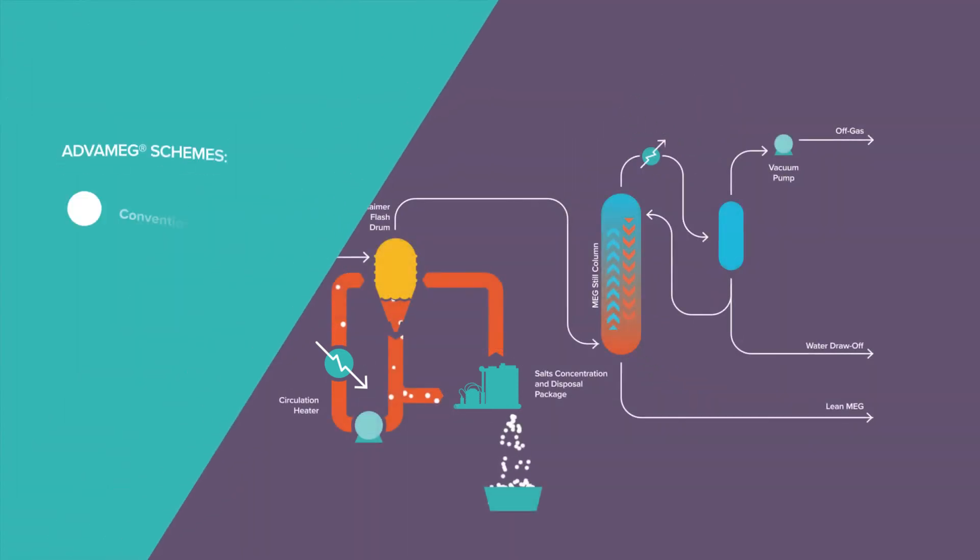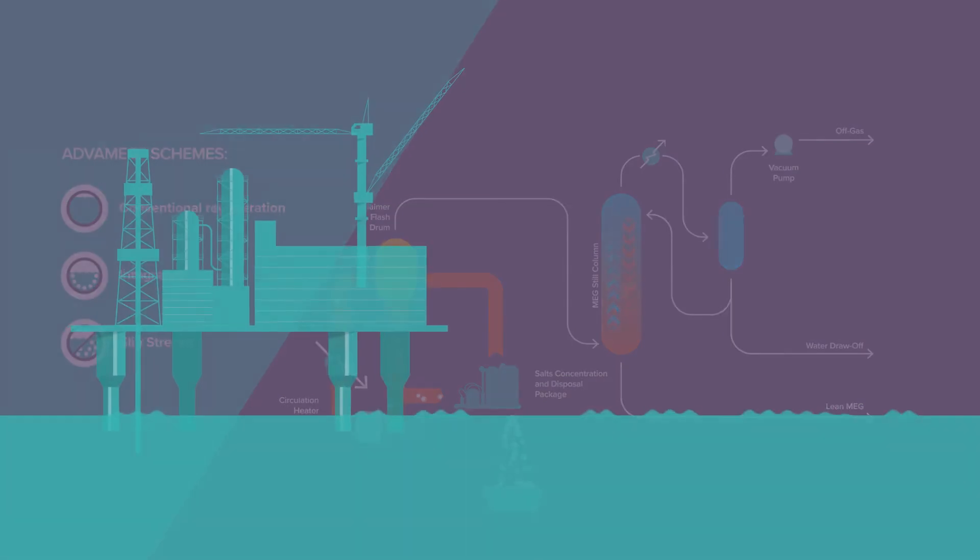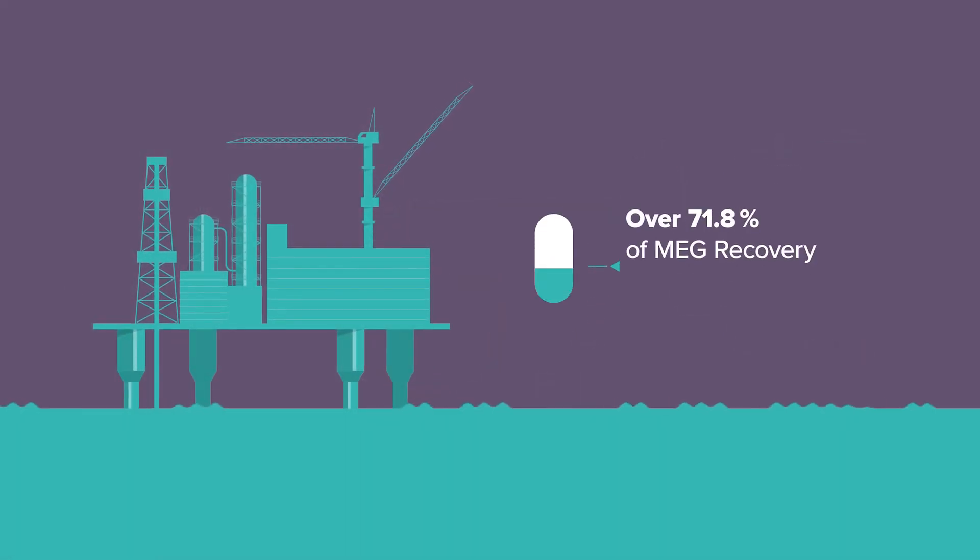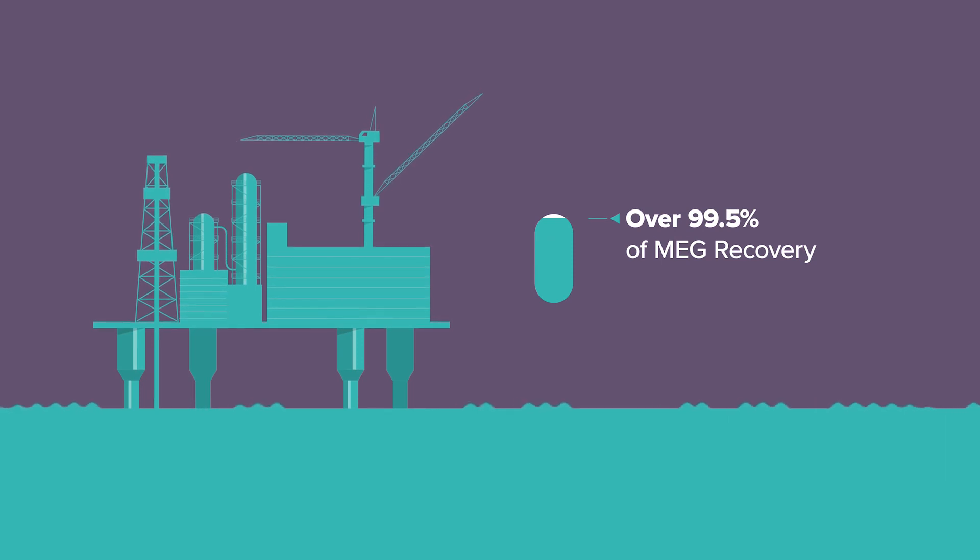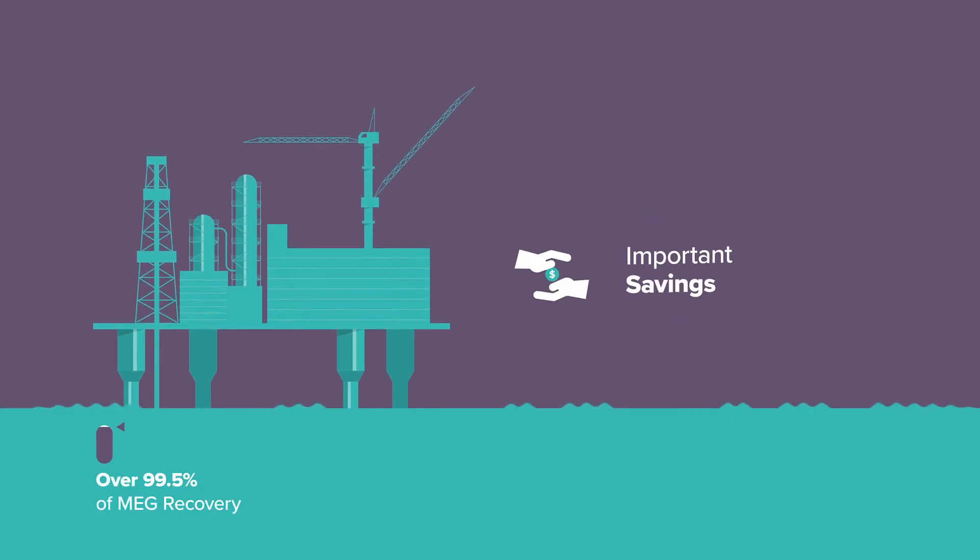The presented scheme is one of the different solutions AXENS can propose. Other schemes adapted to different projects' constraints are also available and industrially proven. The ADVMEG technology has a MEG recovery rate higher than 99.5%, allowing important savings while minimizing the carbon footprint thanks to smart heat integration.